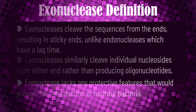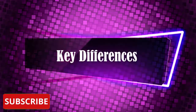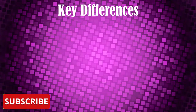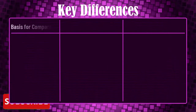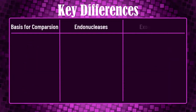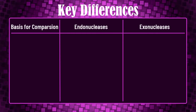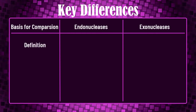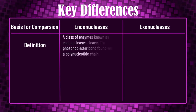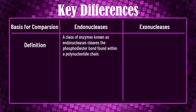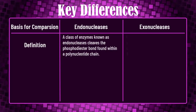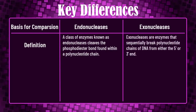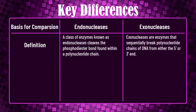Now let's learn about the key differences between endonucleases and exonucleases with the help of a comparison table. The definition of endonucleases: it is a class of enzymes that cleaves the phosphodiester bond found within a polynucleotide chain. Whereas exonucleases are enzymes that sequentially break polynucleotide chains of DNA from either the 5-prime or 3-prime end.